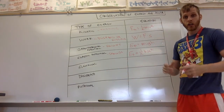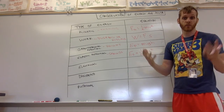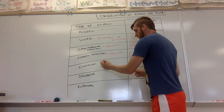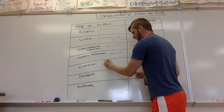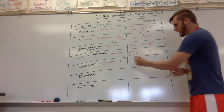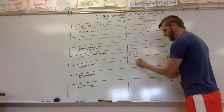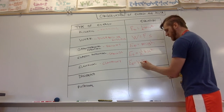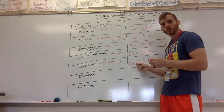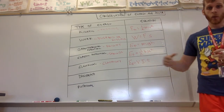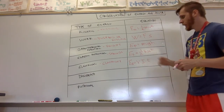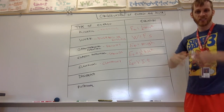There's electrical energy — if there's electricity or electrons being used, there are actually lots of different equations for electrical energy, but just think 'electricity.' The most useful one is: electrical energy E_e equals voltage times current times time. So if you know the voltage and current used, multiply by the amount of time and you get the electrical energy dissipated.